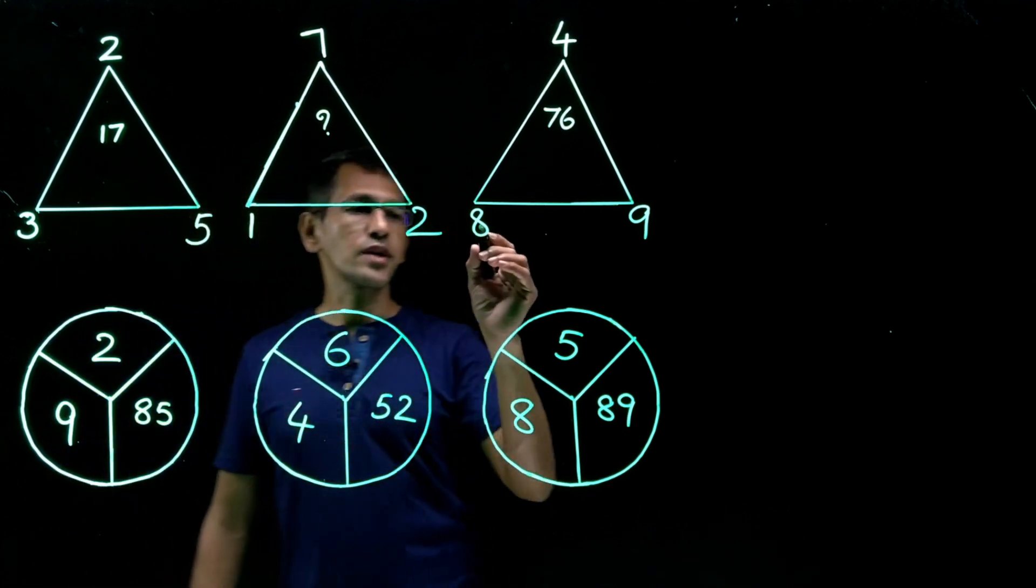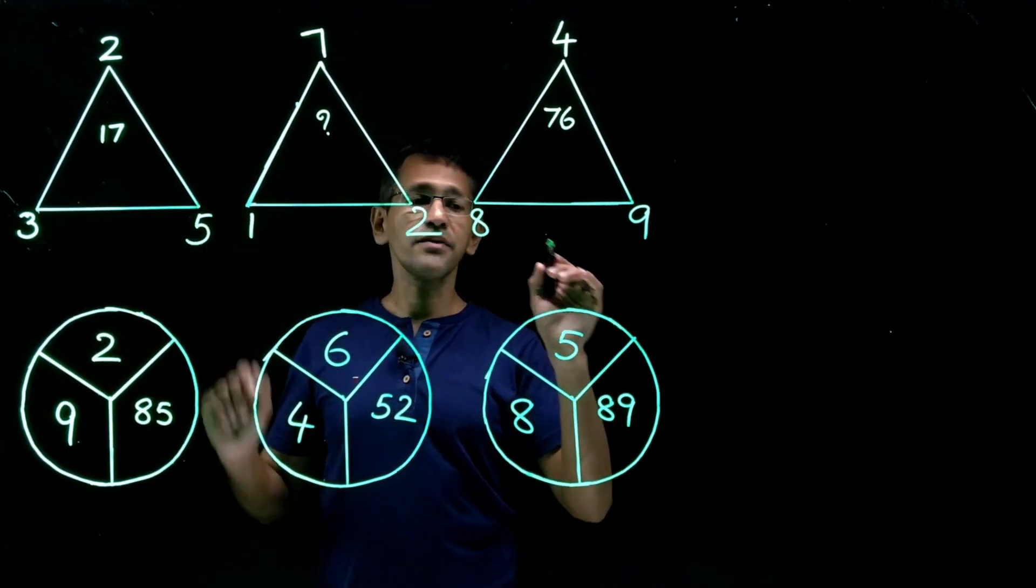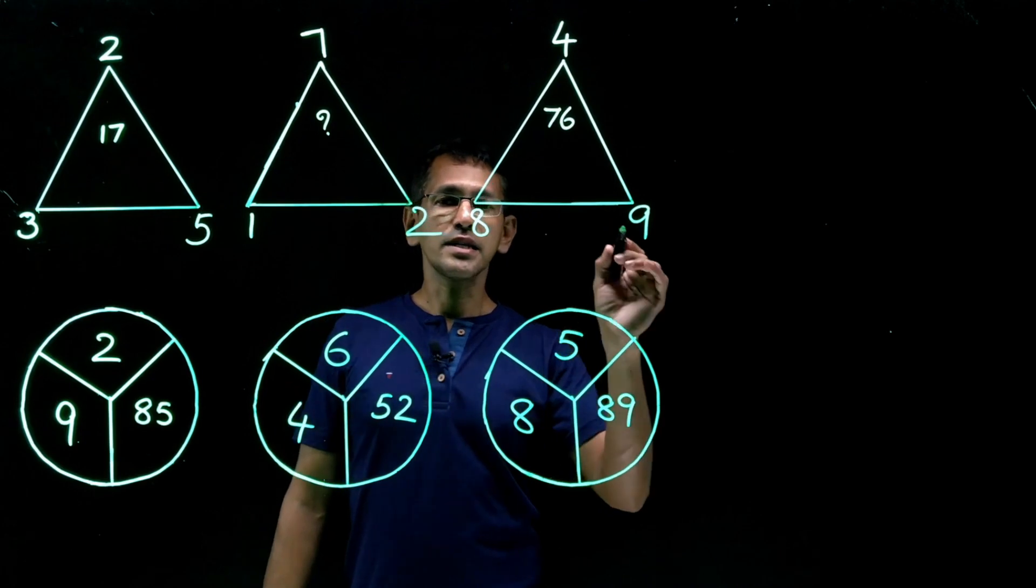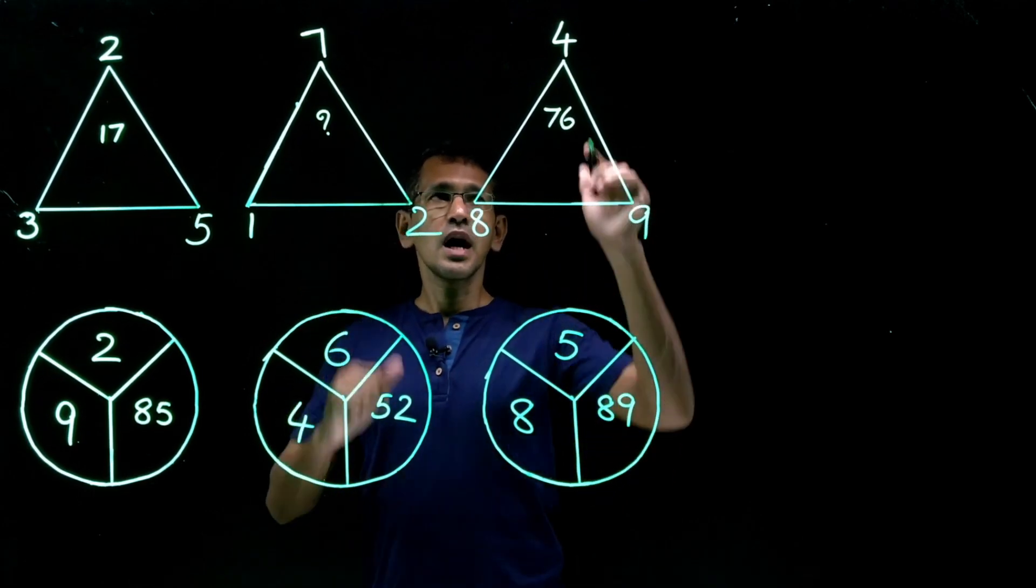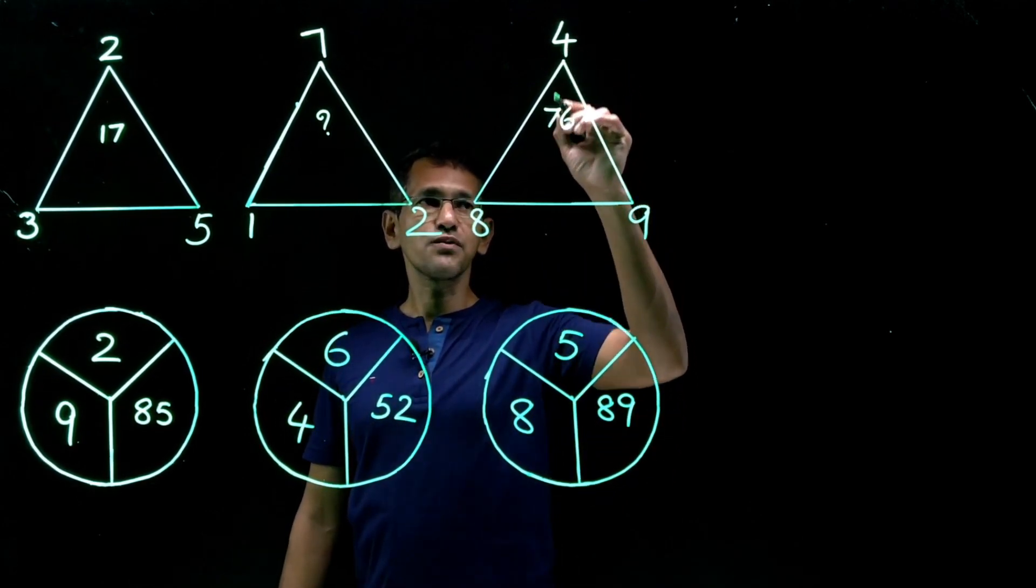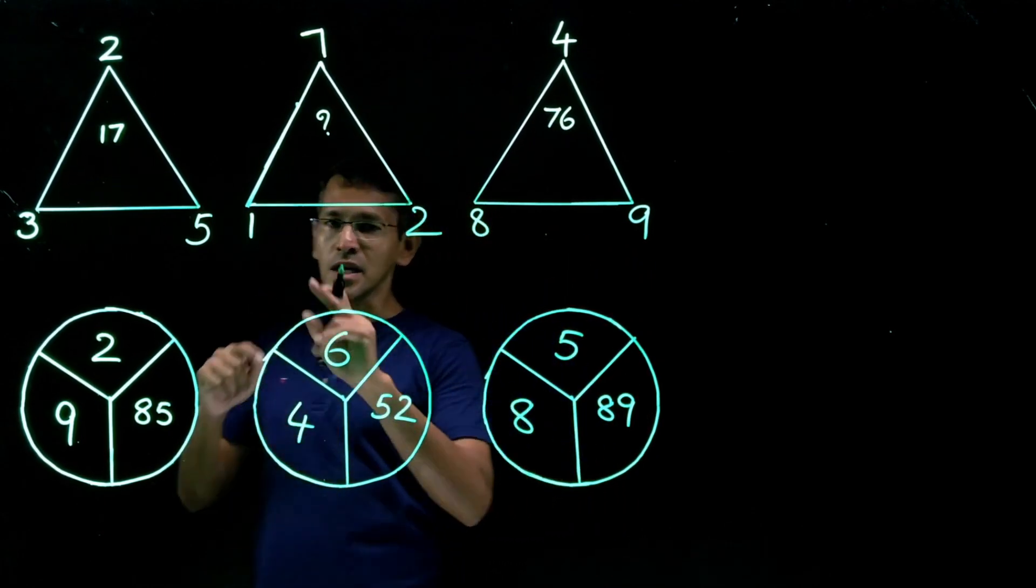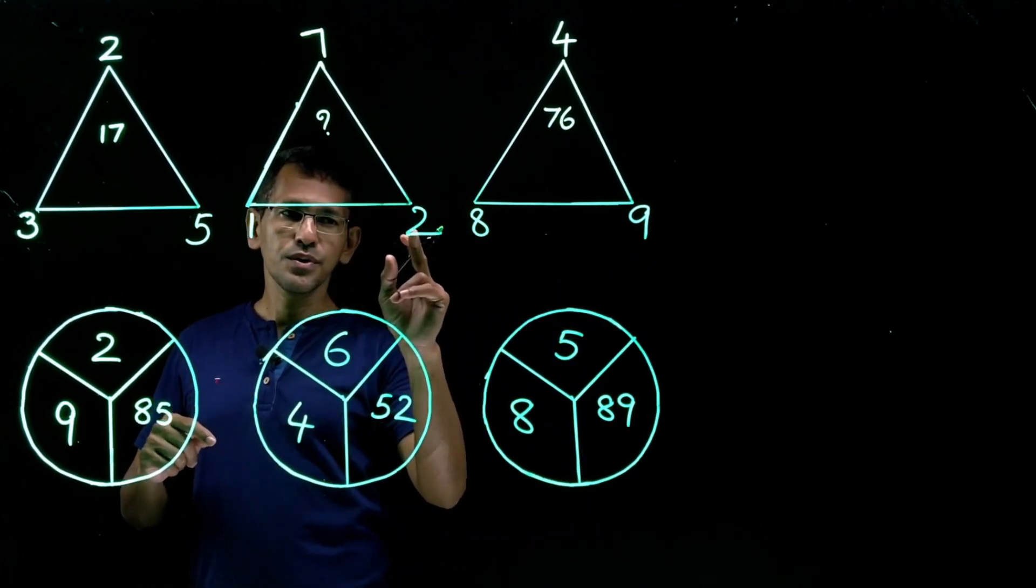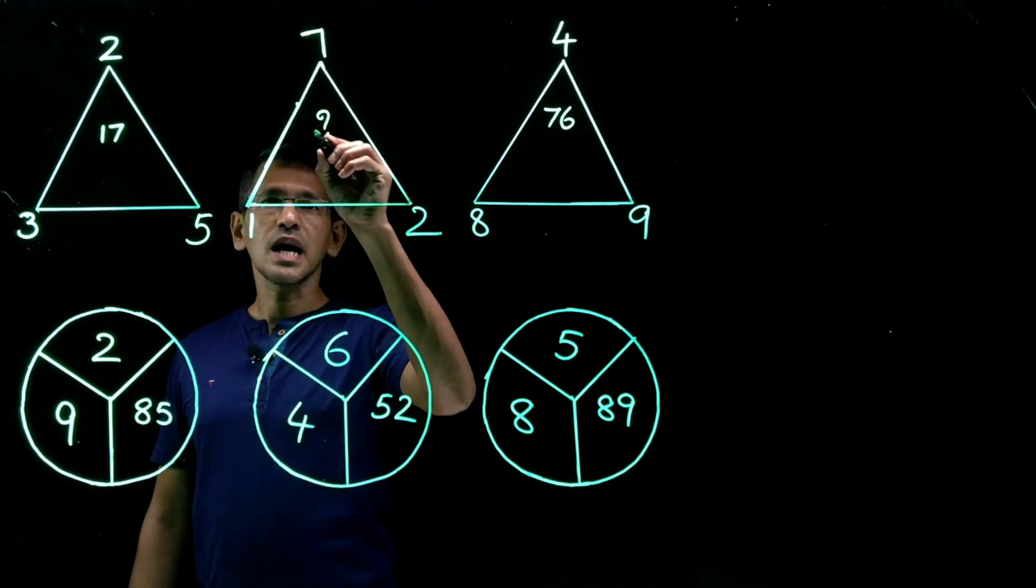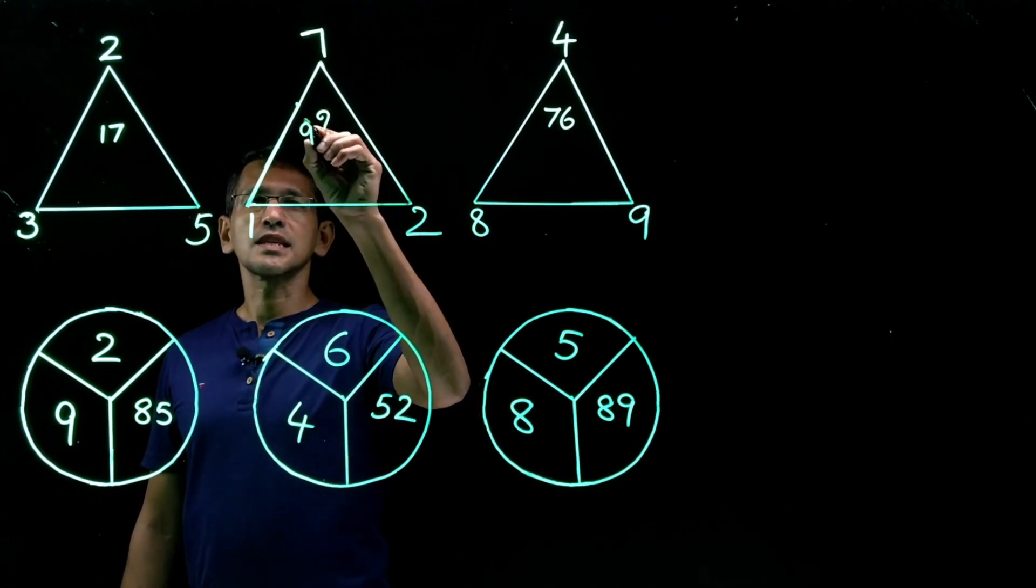If it is the exact same pattern we will apply the pattern for this question mark. Let's try this. 8 into 9, this is 3 into 5. This is 8 into 9, 72 and we have a 4. 72 plus 4, 76. Pretty good. So the answer must be 1 into 2, 2 plus 7, 9 would be the answer in this case.